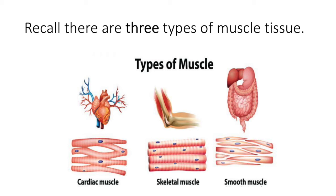Another important function is the maintenance of posture and the stabilization of joints. As you're sitting in your chair right now, skeletal muscles — voluntary muscles — are contracting to keep you upright. When you're standing, there are muscles that stabilize your hip joint, and you don't realize it, but that is occurring.